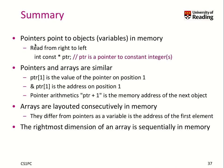To wrap up, pointers point to objects, which are our variables, in memory. You should read any kind of declaration from right to left, typically. So PTR is a pointer to a constant integer. I recommend this kind of reading order because it makes life so much easier.